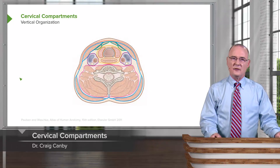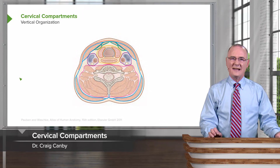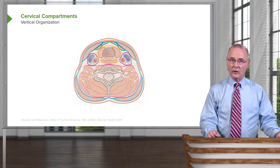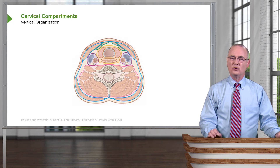Our next stop on this journey of the neck is to look at the cervical compartments. The cervical compartments, of which there are four, are organized in a vertical direction.